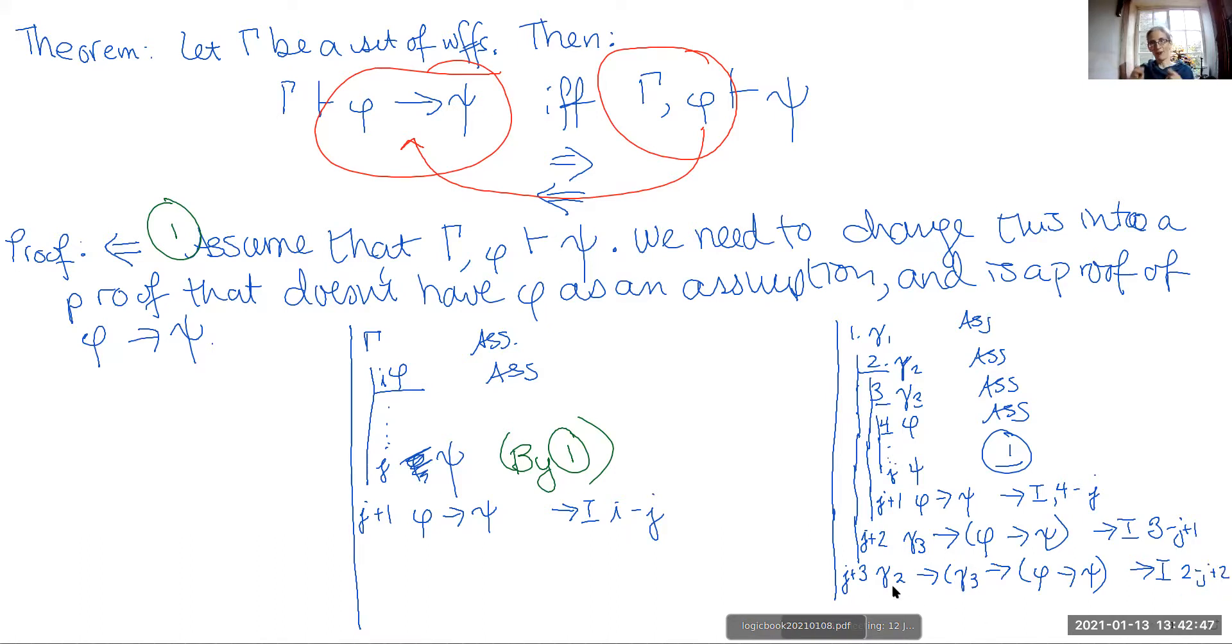Now, this is kind of the cool part because we've never seen anything like this because every single one of our proofs has always started with an assumption. But you can get rid of that assumption at the very last line by using this conditional introduction trick. So right now, j plus three depends on line one.